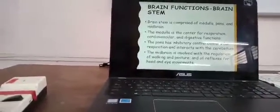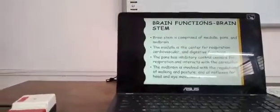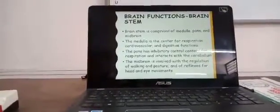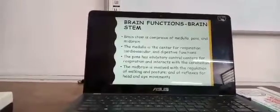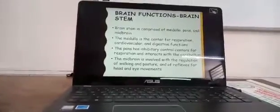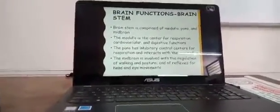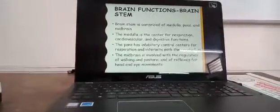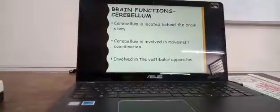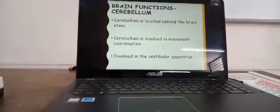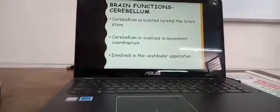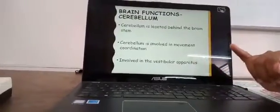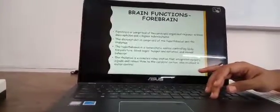Going to brain functions: the brain stem, comprised of the medulla oblongata, pons, and midbrain, is the center of respiration, cardiovascular functions, and digestive functions. The pons has inhibitory control centers for respiration and interacts with the cerebellum. The midbrain is involved in regulation of walking, posture, and reflexes for head and eye movements. The cerebellum, located behind the brain stem, is involved in movement coordination and the vestibular apparatus, which is related to hearing and balance.